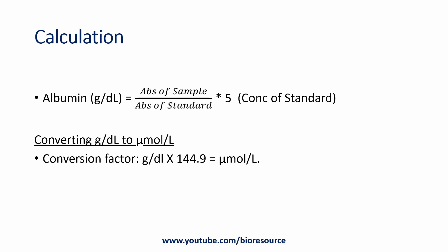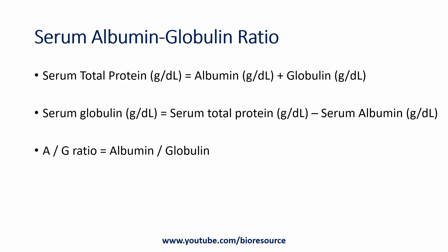To calculate the concentration of albumin in grams per deciliter, take the absorbance of the sample divided by the absorbance of the standard, multiplied by 5 — which is the concentration of the standard. If you want to convert grams per deciliter to micromoles per liter, the conversion factor is 144.9.